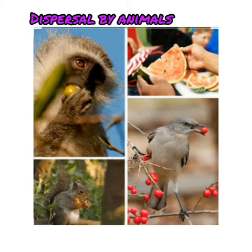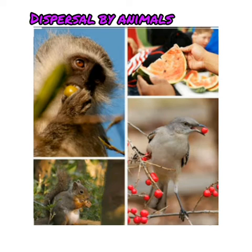Human beings also eat fruits like orange, mango, pear, and plum. The flesh is eaten and the seeds are thrown away. Some fruits like tiger's claw, dhatura, and burdock have seeds with hooks. These stick to the fur of animals and are carried away.